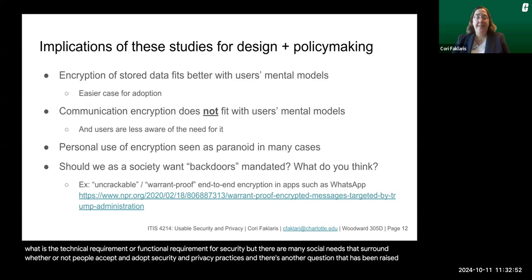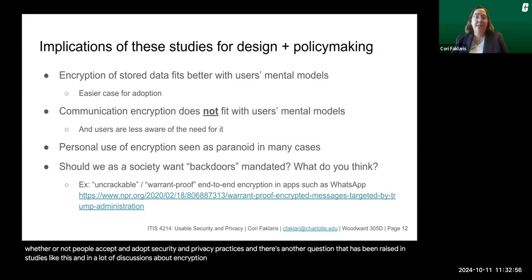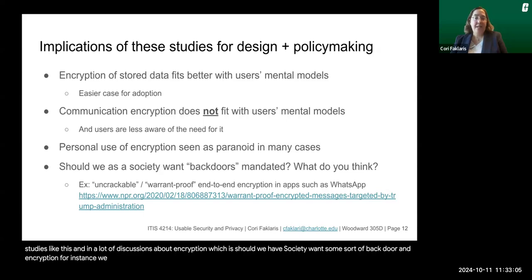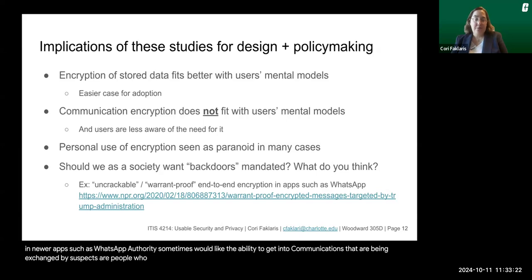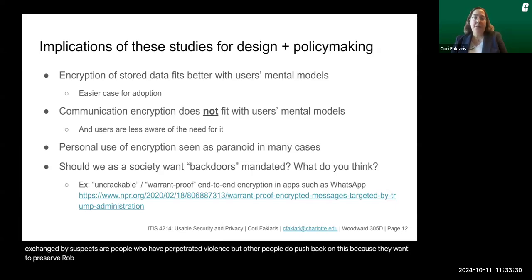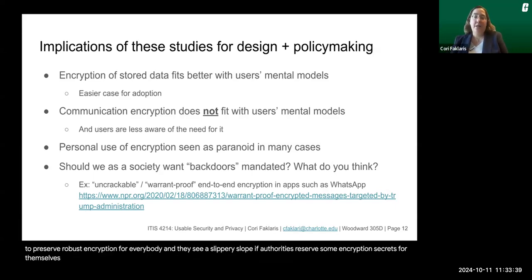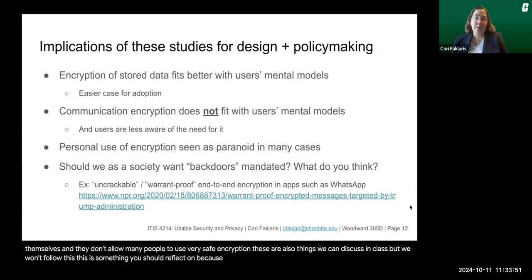Another question raised in studies and discussions about encryption is whether society should want some sort of backdoor in encryption. We've had societal debates about uncrackable, so-called warrant-proof end-to-end encryption in apps such as WhatsApp. Authorities sometimes want the ability to access communications exchanged by suspects or perpetrators of violence. Others push back because they want to preserve robust encryption for everybody, and they see a slippery slope if authorities reserve encryption secrets for themselves and prevent widespread use of safe encryption. These are policy debates we will continue to have into the future.